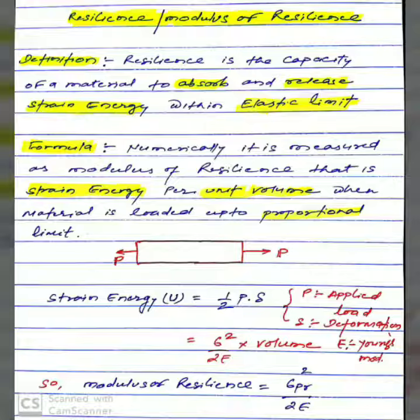First, the definition: resilience is the capacity of a material to absorb and release strain energy within elastic limit. Numerically, this is measured as modulus of resilience, that is strain energy per unit volume when material is loaded up to proportional limit.